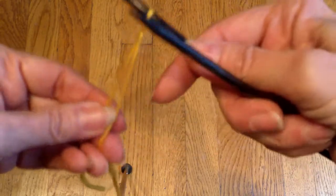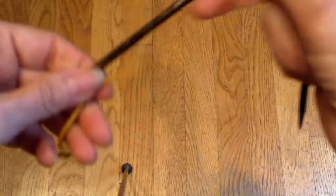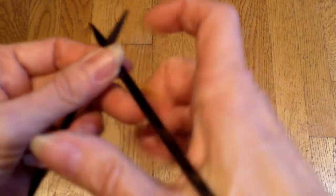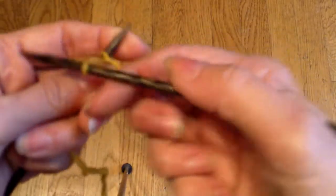Like any cast-on, you make a slip knot, and you basically knit the stitch.